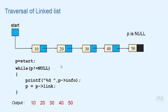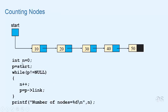We can use the same loop to count the number of nodes in the list. We take a variable n initialized to zero, and whenever we visit a node we increment n. So when the loop ends, the value of n gives us the number of nodes in the list.